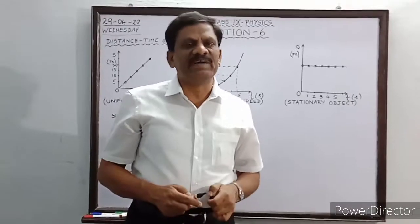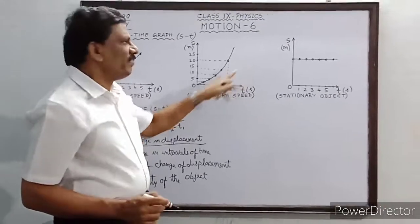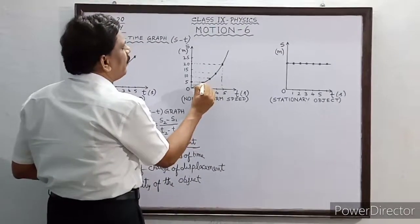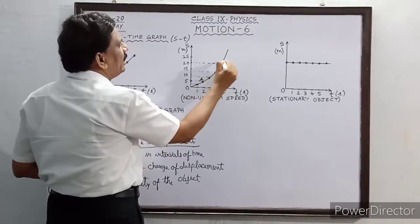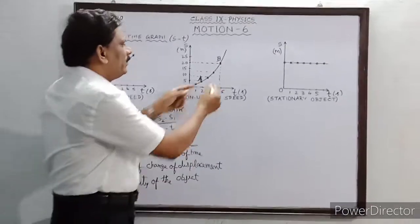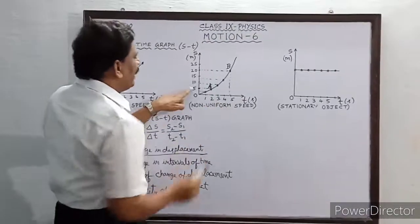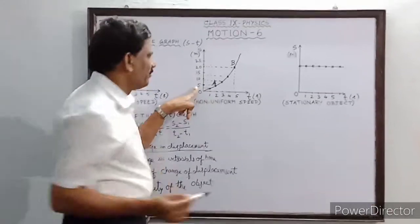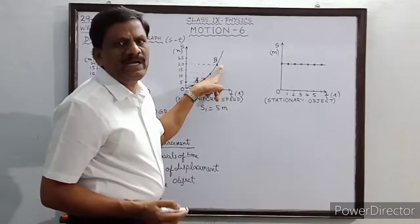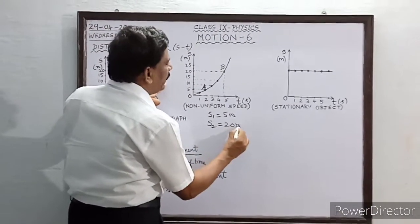To find the slope, take any two points on the graph — for example, points A and B. At point A, the distance S1 equals 5 meters, and at point B, S2 equals 20 meters. Projecting point A onto the x-axis gives T1 equals 2 seconds, and projecting point B gives T2 equals 5 seconds.